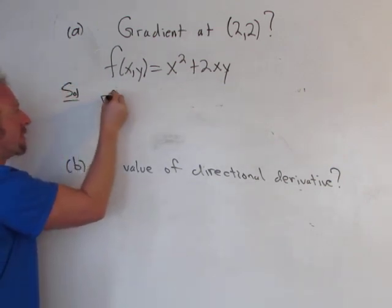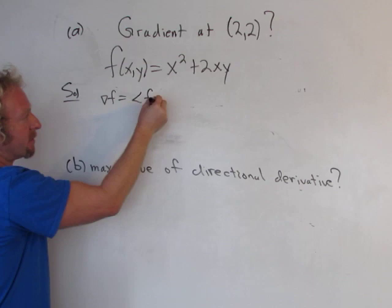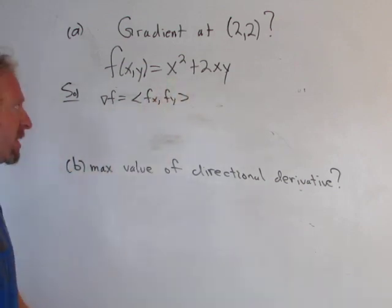The gradient vector is just this vector with partial derivatives like that. That's the definition of the gradient, pretty easy to memorize. We just take the partials, let's just do it.